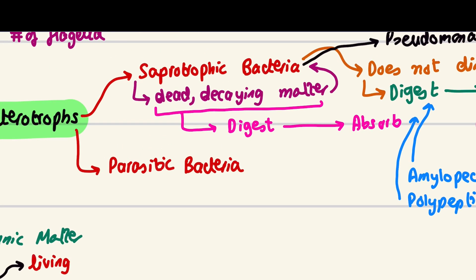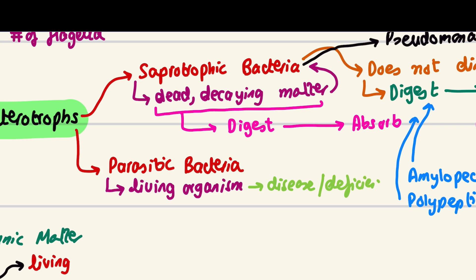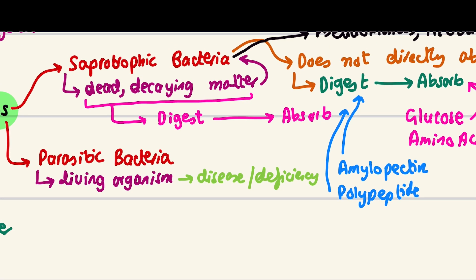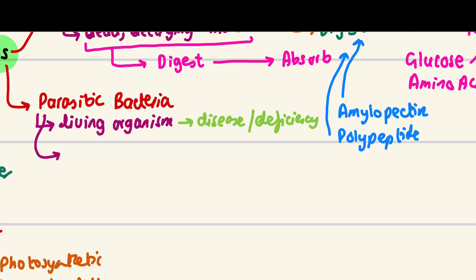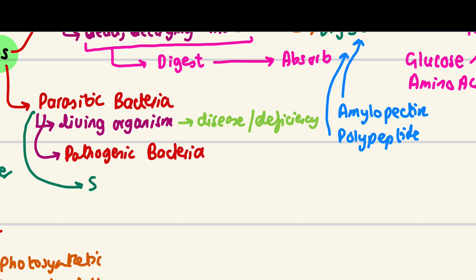Parasitic bacteria cause disease or deficiency in the host — for example, some organisms cause no apparent symptoms but over time lead to nutritional deficiencies. Parasitic bacteria can also be called pathogenic bacteria because they cause disease. An example is Streptococcus — Strep pneumoniae.